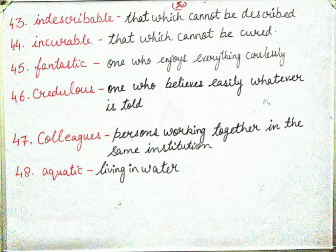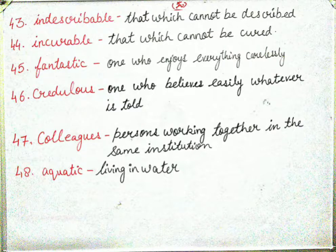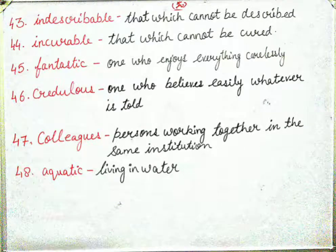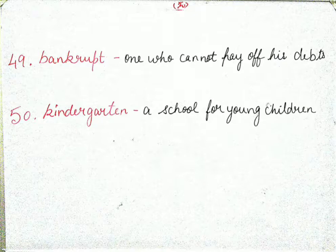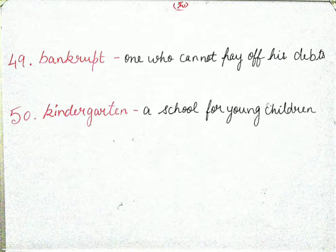Next is 'aquatic' — living in water. Jo cheezein paani mein rehti hain unhe aquatic kehte hain, for example fish, shark, octopus. Next is 'bankrupt' — one who cannot pay off his debts. Jo apna udhaar na chuka sake use bankrupt kehte hain. Next is 'kindergarten' — a school for young children, also called play school.